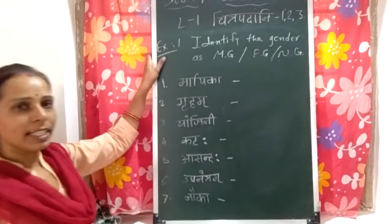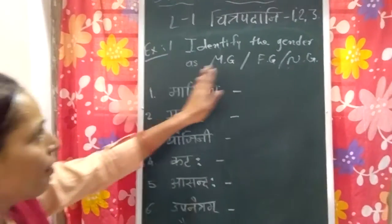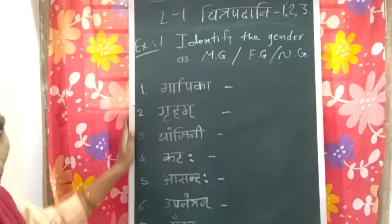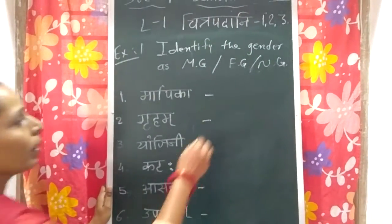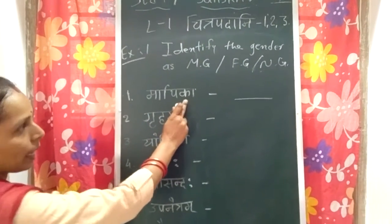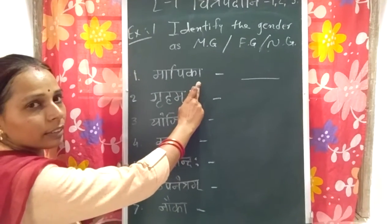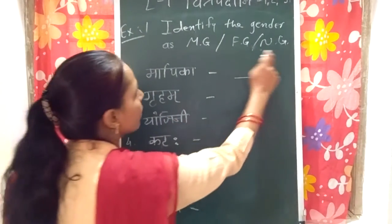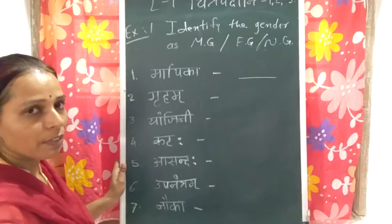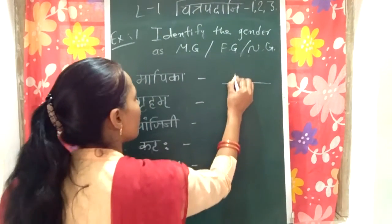Let's solve exercise 1. In these words you have to identify the gender of the words. Let's start with the first one: maapika. It ends with 'ā'. When the word ends with 'ā', it is a feminine word — feminine gender.